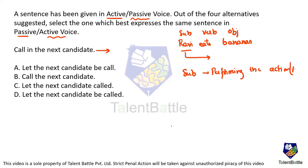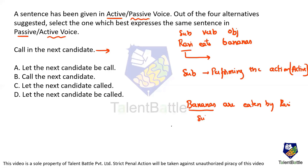To convert to passive voice: 'Bananas are eaten by Ravi.' Now 'bananas' is the subject, 'are eaten' is the verb, and 'Ravi' is the object. The subject 'bananas' is receiving the action — it is not performing it. Whenever the subject receives the action, it is called passive voice.